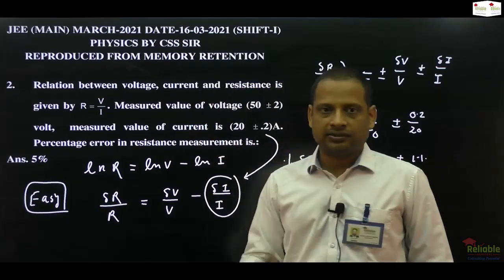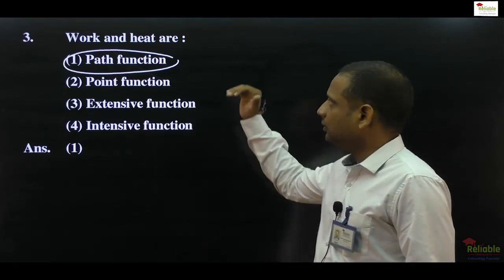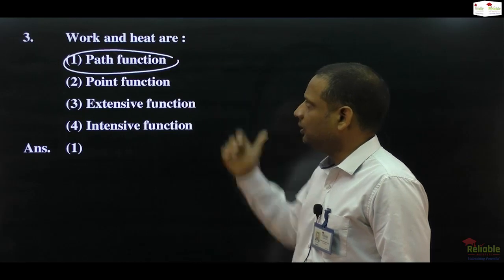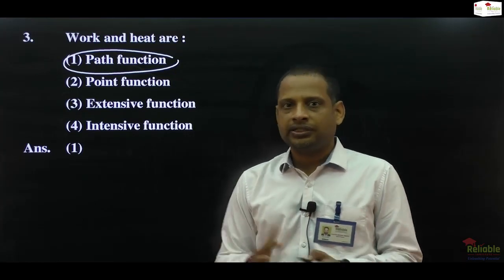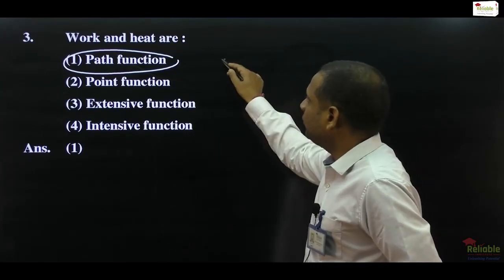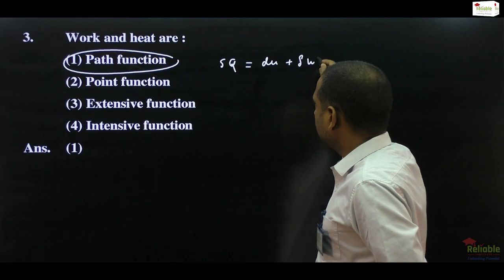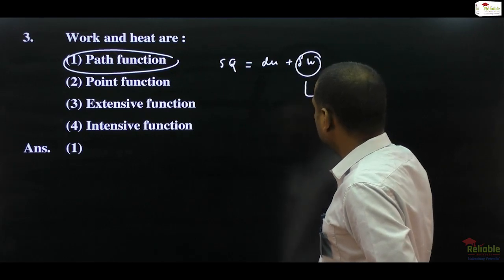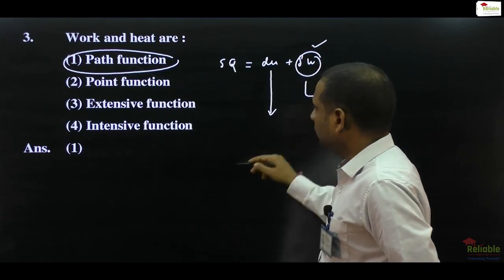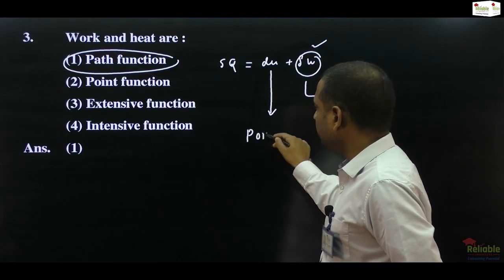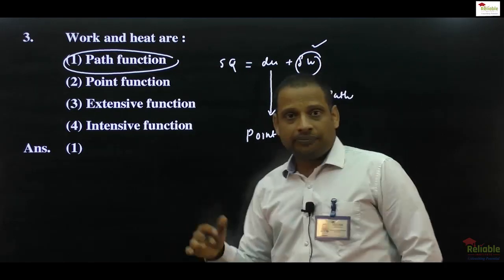Next question is from heat and thermodynamics chapter, and again this is an easy question. Here you can see that you are given some specific properties of work and heat. As we know, work is a path function - different paths give different work values for the gas. Because work is different, heat will also be different according to first law of thermodynamics: dQ is equal to dU plus dW. So this depends on path.